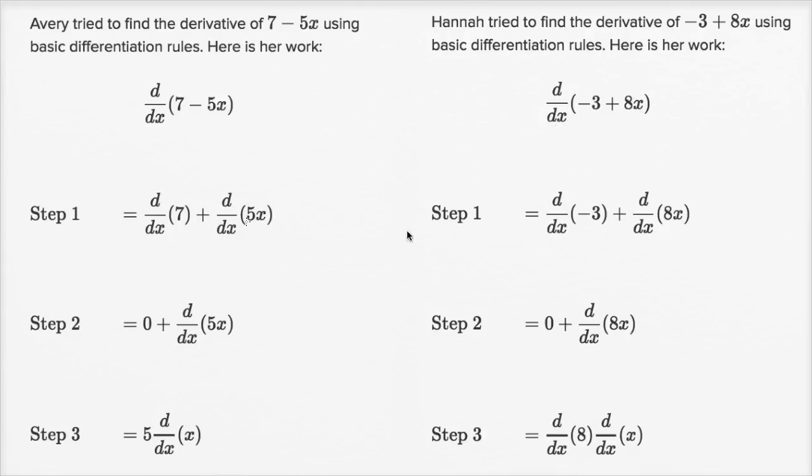These are two different examples from the differentiation rules exercise on Khan Academy, and I thought I would do them side by side because we can think about what each of these people are doing correct or incorrect. These are similar expressions - we have a constant and then a first degree term in each case.